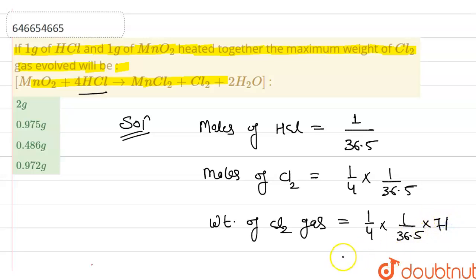Okay, so it will give us 0.486 gram. So the correct value of mass of Cl2 gas is option C. Thank you guys.